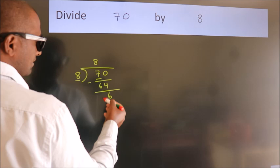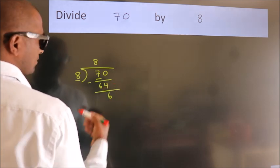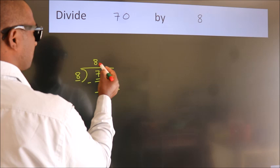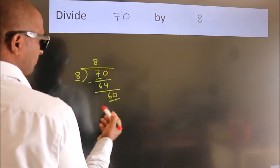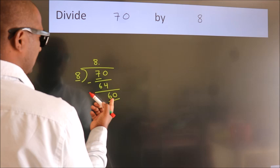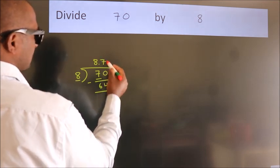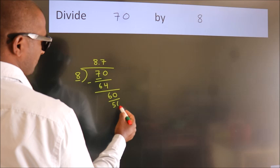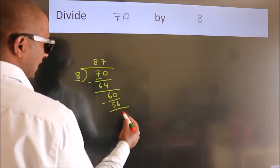After this, no more numbers to bring down. So what we do is we put a dot and take zero. So 60. A number close to 60 in the 8 table is 8 times 7 equals 56. Now we subtract. We get 4.